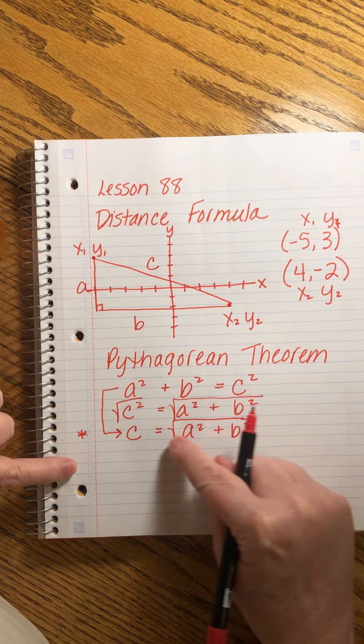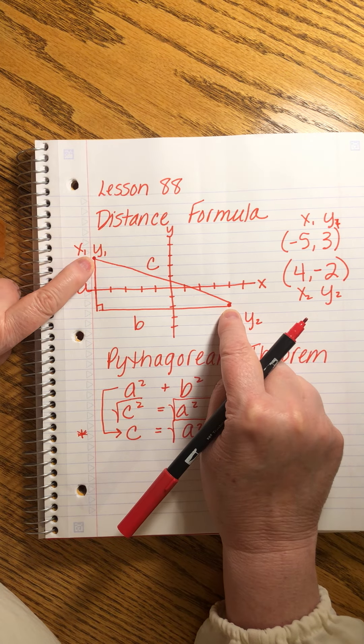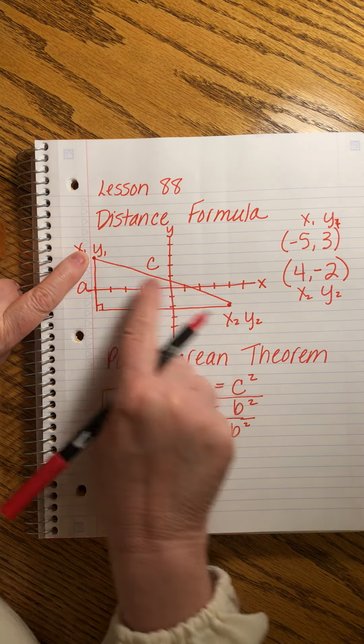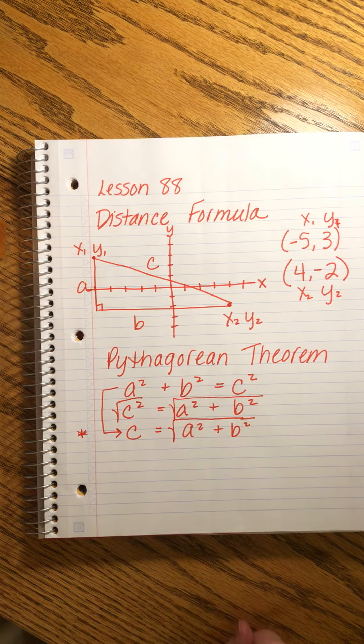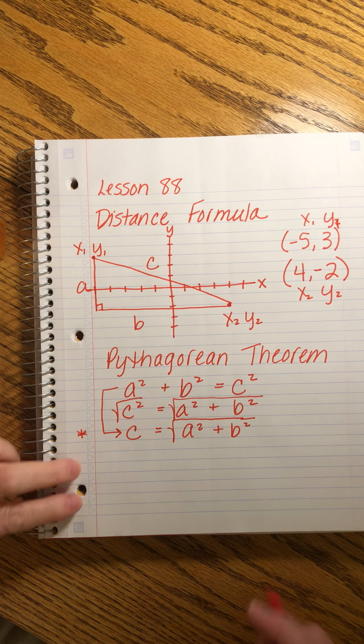We can write c equals the square root of a squared plus b squared. Okay these are the same, this is just another form of it and for our purposes this is going to be helpful. C is the hypotenuse, a and b are the legs and this picture helps us visualize what c does. C goes directly from this point to the other point. Okay that's cool.